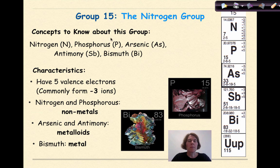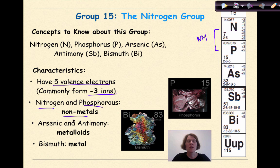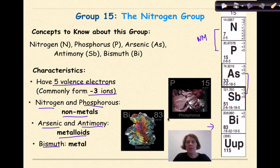Now let's talk about Group 15, the nitrogen group, which includes nitrogen, phosphorus, arsenic, antimony, and bismuth. Each of these elements has five valence electrons, and the most common charge is negative 3 — since they have five valence electrons, it's easier to gain three electrons to complete the octet. Nitrogen and phosphorus are our non-metals, arsenic and antimony are our metalloids, and bismuth is our metal. This is a great group to examine the trend of increasing metallic character as you go down a group.